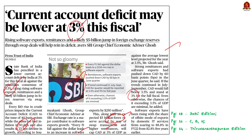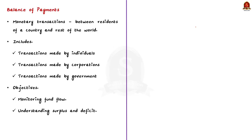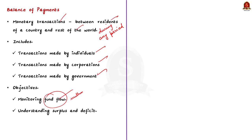In this context, let us brush up our basics regarding balance of payments. Balance of payment is a statement which records all the monetary transactions made between residents of a country and the rest of the world during any given period. This statement includes all the transactions made by individuals, corporations and the government. The balance of payment helps in monitoring the flow of funds within and outside the country.